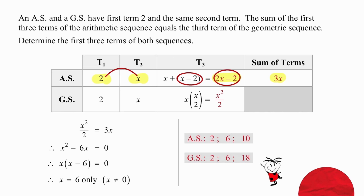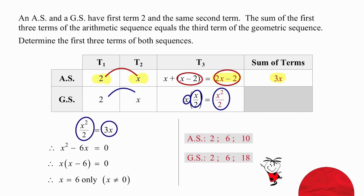Working instead with the geometric sequence, we're going to take the second term and divide it by the first term to get the common ratio, which is x over 2. Multiplying that ratio by the value of the second term gives us the value of the third term. Now we're going to equate the value of the third term of the geometric sequence with the sum of the first three terms of the arithmetic sequence.